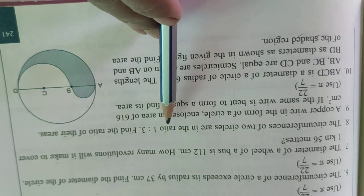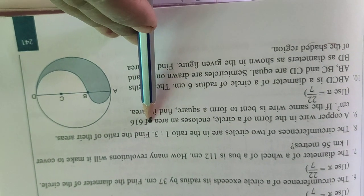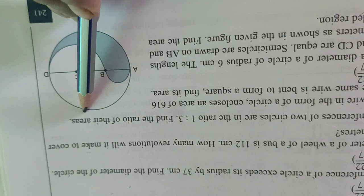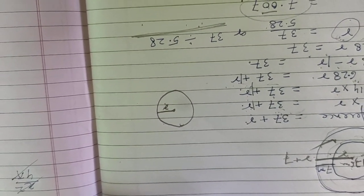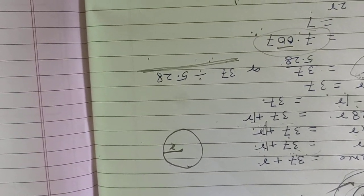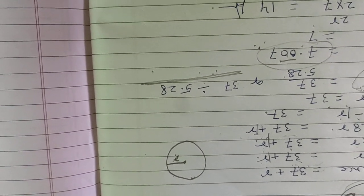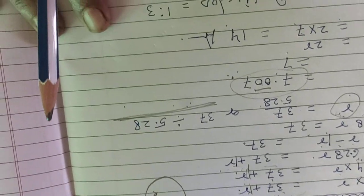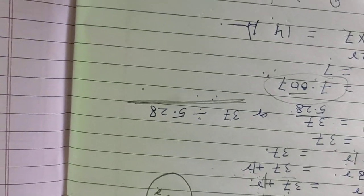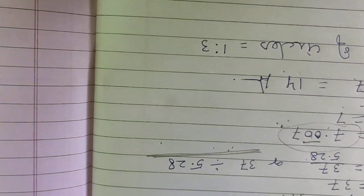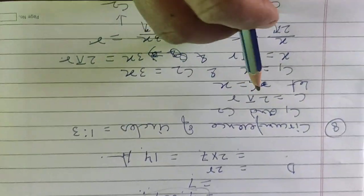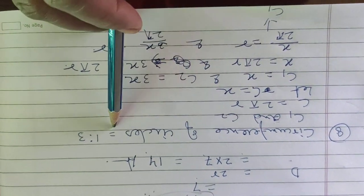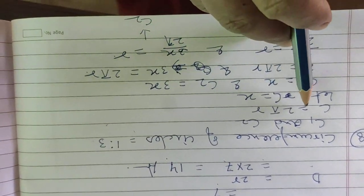Now let's come to question number 8. The circumferences of two circles are in ratio 1 is to 3 — find their areas. In question 4 they gave you the radius ratio and asked for the circumference ratio; here in question 8 they give you the circumference ratio of 1 is to 3 and ask you to find the ratio of their areas. Let's take the circumferences of the circles as 1 is to 3 as given.